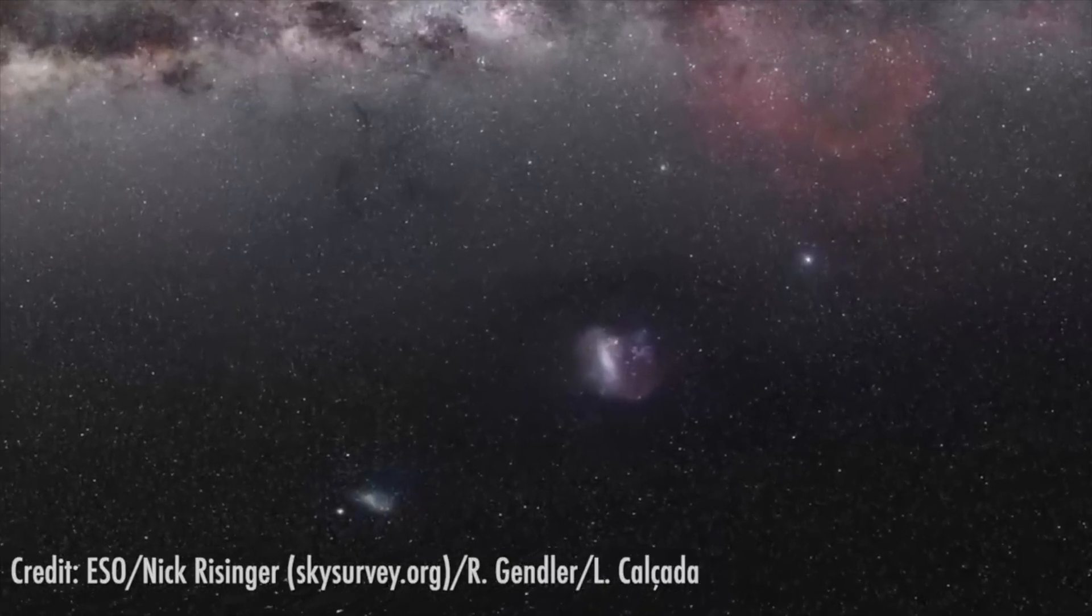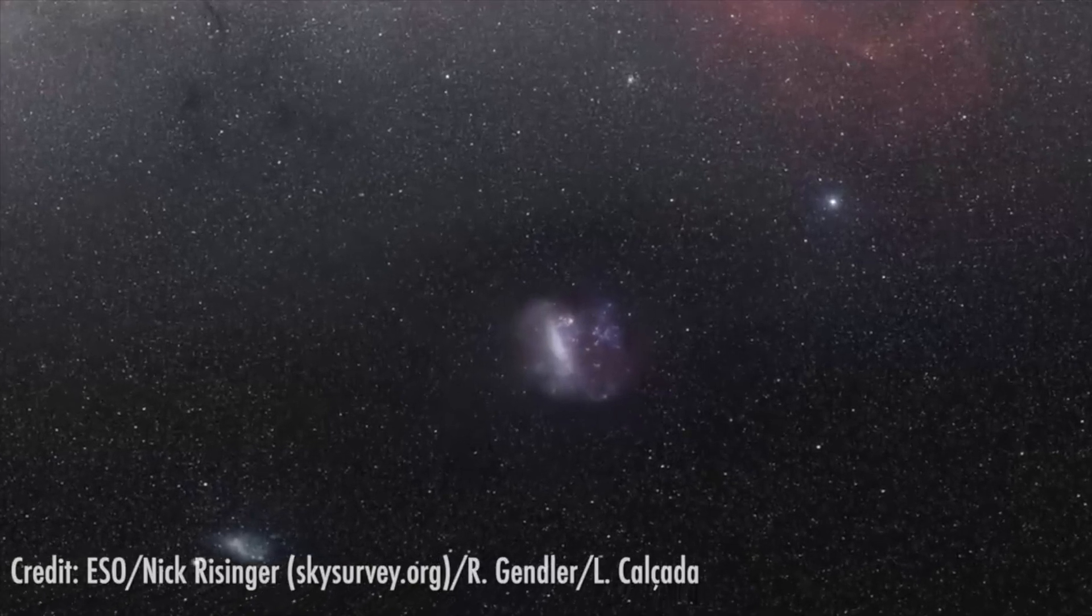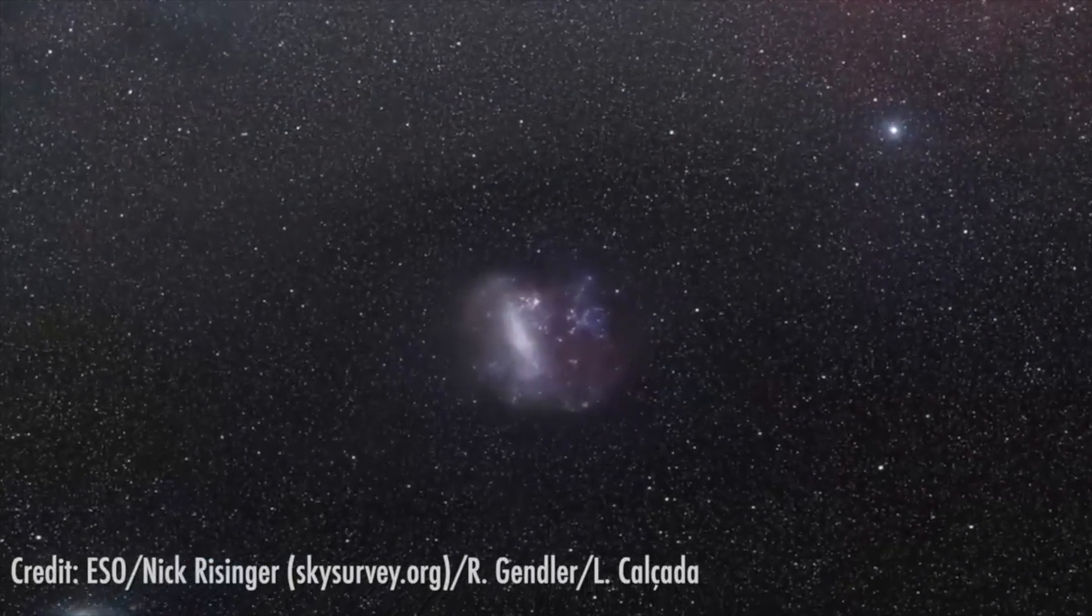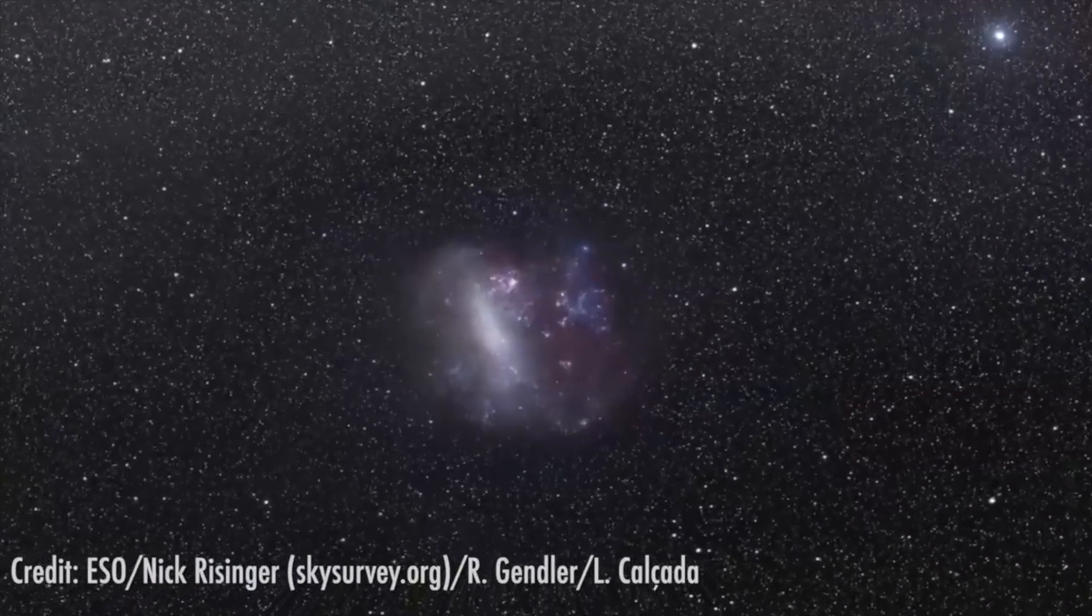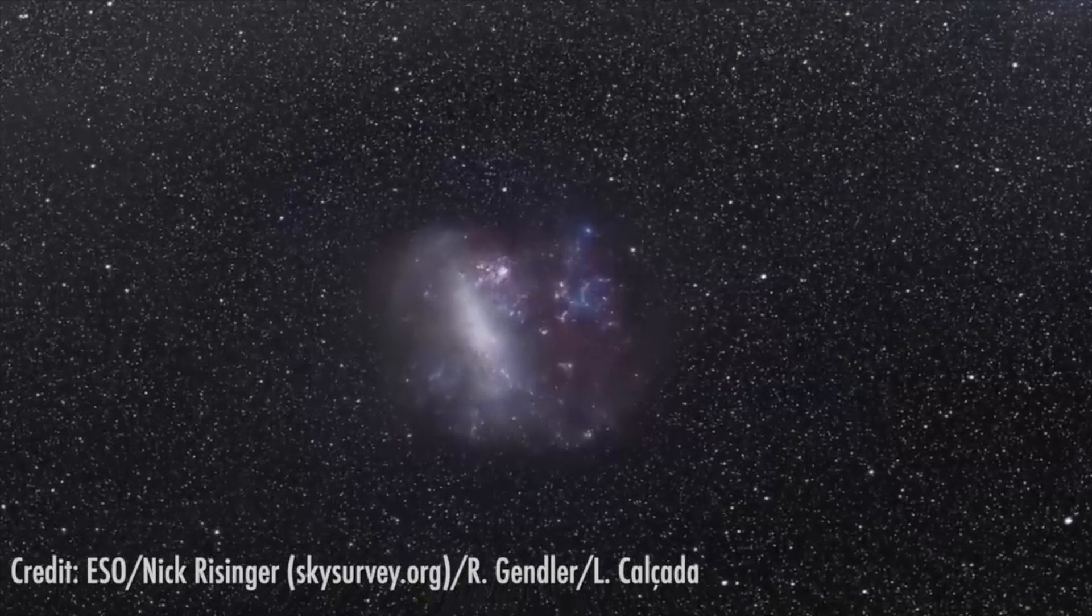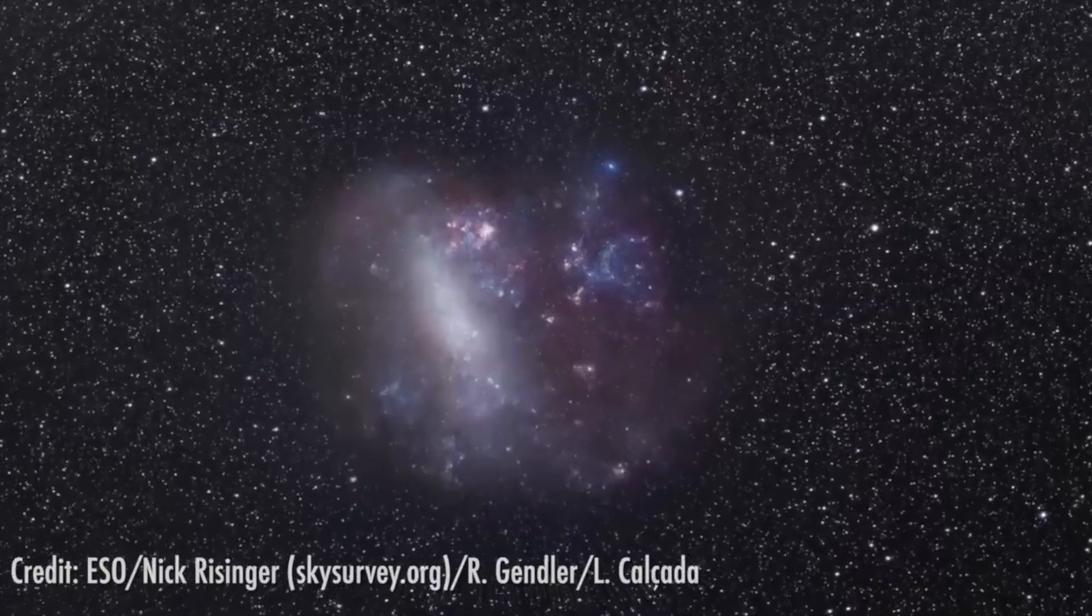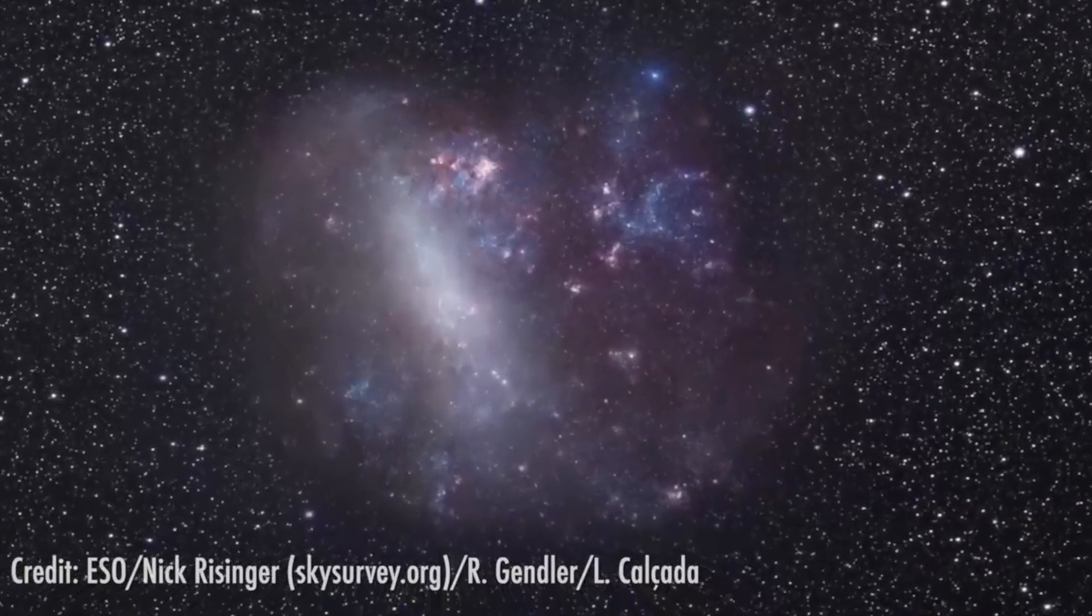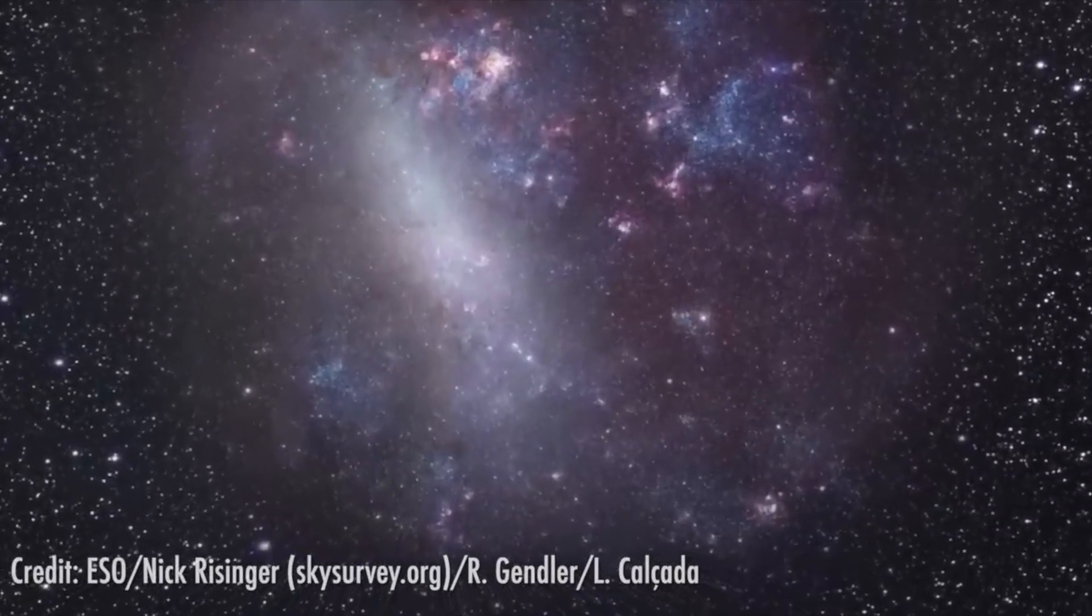But in this new paper, I combine that work with these new microlensing results, which show that there should be a huge number of Mars-sized exoplanets which are just floating in space. And what I found was really striking. What I found was that we should expect, based on current statistics, one or maybe even a few small terrestrial planets lurking out there in the outer solar system.